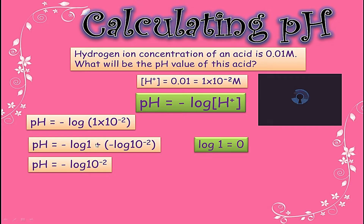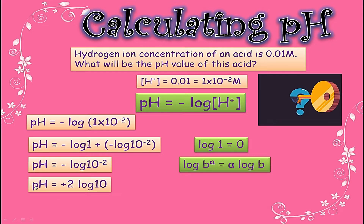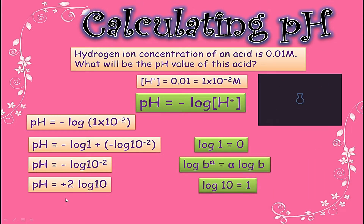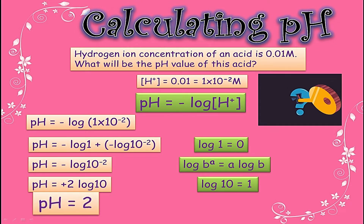Because minus multiplied by plus becomes minus when we open the bracket. We have another rule for log: log(bᵃ) = a·log(b), so the power comes before log. It becomes pH = +2·log(10). This positive sign is because minus times minus equals plus. Log 10 is always 1, so pH = 2 × 1 = 2. So the pH of this acid is 2. For further numericals you can watch my upcoming videos.